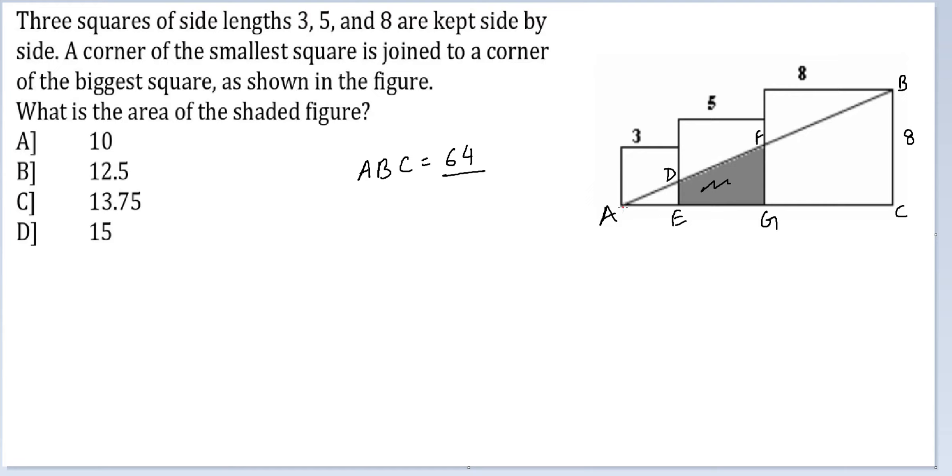Next thing, look at AGF and ABC. Can you see that these two triangles are similar? And the ratio of their sides is 1 is to 2. This is 8, this is 16.